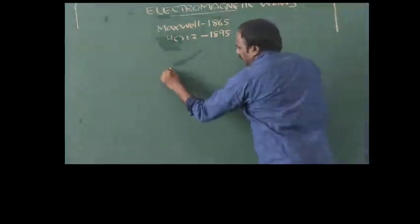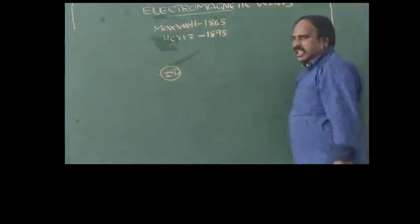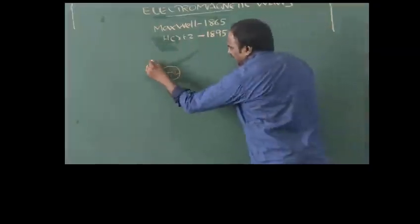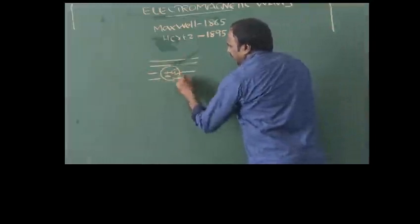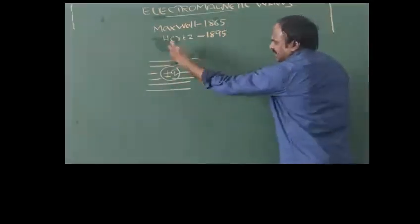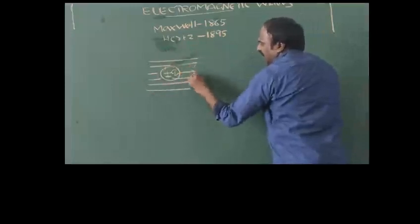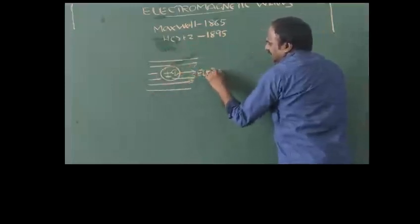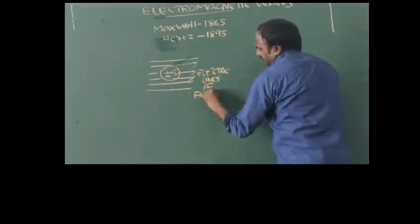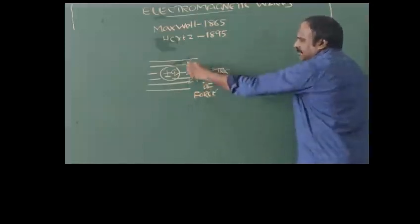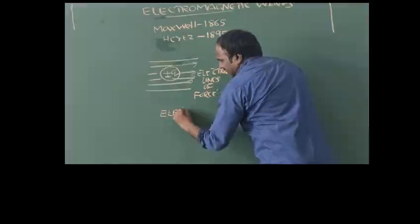To explain this concept, we take a charge which may be positive or negative. Whenever we have a charge, it automatically produces some electric lines of force around it. The total number of electric lines of force is called electric flux.